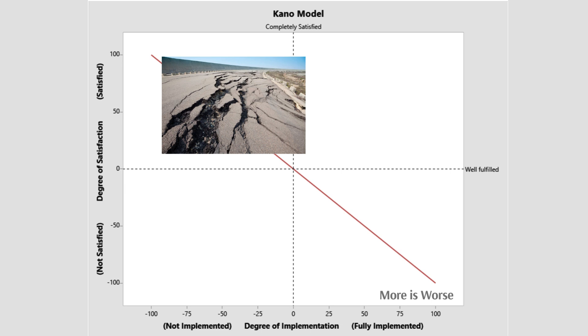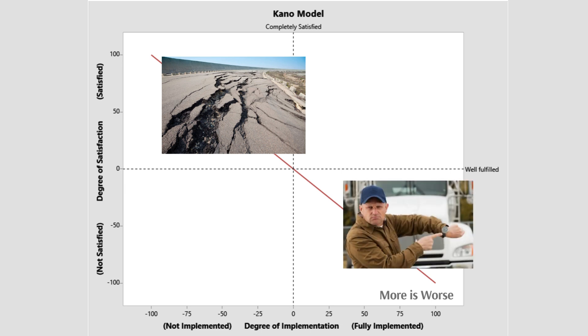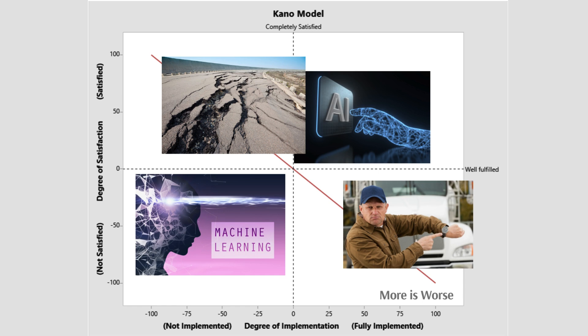A few small cracks in the road are okay, but many cracks or large ones are not. More and larger create dissatisfaction. Being late one time may be okay with the customer, but a number of times is not — more is worse. AI/ML may be a performance requirement for some market segments, but others could consider it a reverse requirement, where more is worse and creates dissatisfaction when fully implemented.